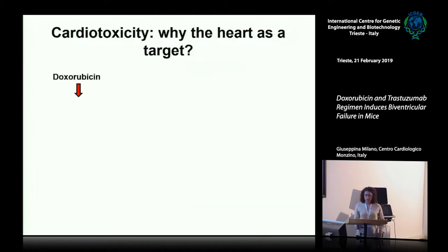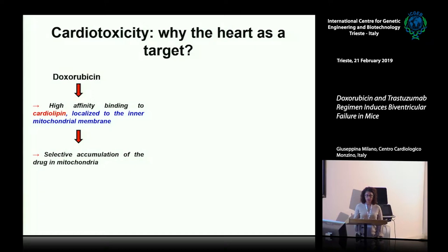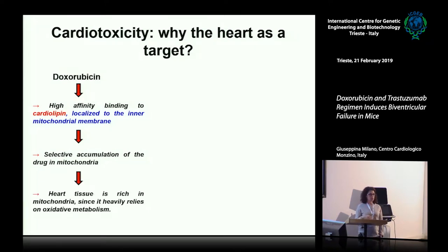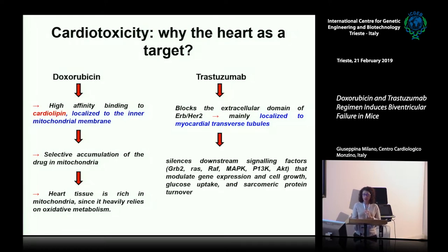Why does the heart show particular susceptibility? Doxorubicine has a higher affinity for cardiolipin localized in the inner mitochondrial membrane, which induces a selective accumulation of the drug in mitochondria, and the heart is rich in mitochondria. Additionally, Trastuzumab blocks the extracellular domain of HER2 localized in myocardial transverse tubules, which disrupts downstream signaling factors that modulate gene expression implicated in cardioprotection.